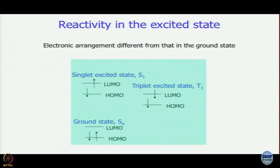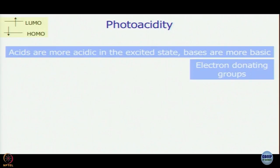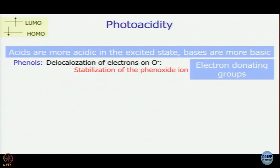Many reactions or chemical processes that do not take place in the ground state can take place when the molecule is excited. We generally do things better when we are excited — molecules do the same; they usually work better when excited. As we said earlier, photoacidity arises from there: organic acids are more acidic in the excited state, organic bases are more basic. The example we took was that of phenols — everybody knows that phenols are acidic because the phenoxide ion produced is stabilized by delocalization of the electron cloud on oxygen over the ring.